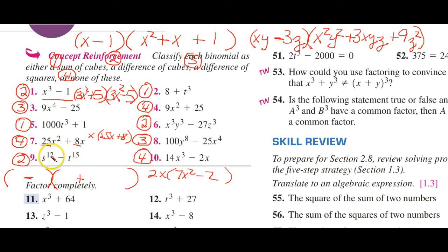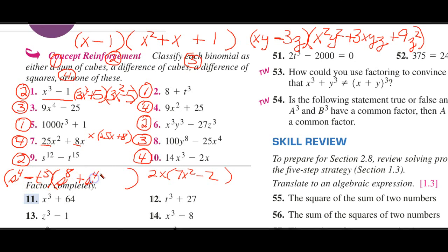Now we're going to divide this 12 by 3 and get s to the 4th. Divide this by 3 and get t to the 5th. And now we square this and get s to the 8th. Multiply these. We get s to the 4th t to the 5th.